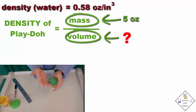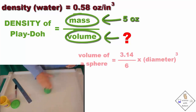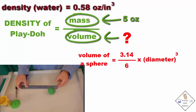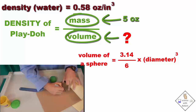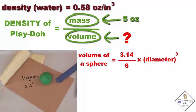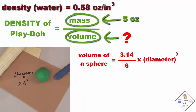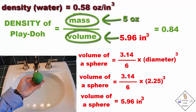It's easy to roll Play-Doh into a sphere, and the equation for the volume of a sphere is equal to pi over 6 times the diameter of the sphere cubed. The diameter of a 5-ounce sphere of Play-Doh is 2 and a quarter inches, or 2.25 inches. So that means the density of our Play-Doh is 0.84 ounces per cubic inch.